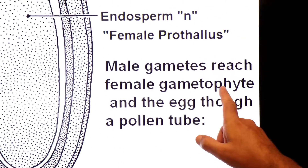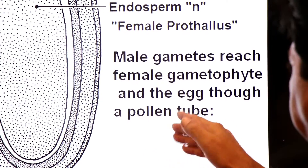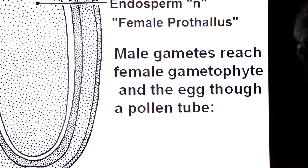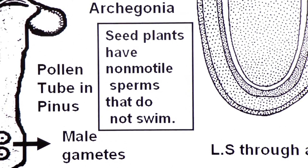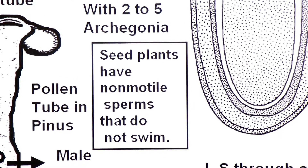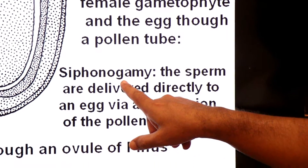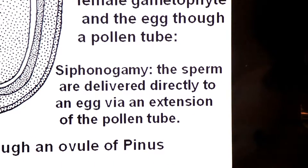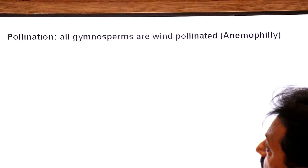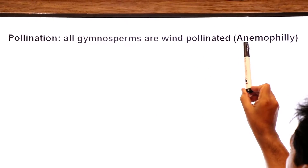Male gametes reach the female gamete through the pollen tube — isko kehte hain siphonogamy. Seed plants have non-motile sperm; they do not swim and do not require external water. The fertilization by pollen tube is called siphonogamy. The sperms are delivered directly to the egg via an extension of the pollen tube. In ki pollination wind pe dependent hoti hai — all gymnosperms are wind pollinated (anemophily).